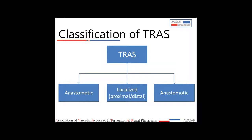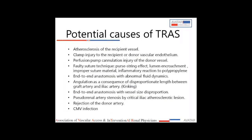Depending on the location of the stenosis, TRAS has been classified as anastomotic, localized, or diffuse. The most common type is anastomotic TRAS, which is almost always because of faulty surgical techniques — deep suturing, faulty techniques, or improper suture material. Localized TRAS can be either proximal or distal. The pre-anastomotic TRAS is usually due to atherosclerotic disease extending from the iliac artery into the transplant renal artery, or injury caused by clamps during surgery.